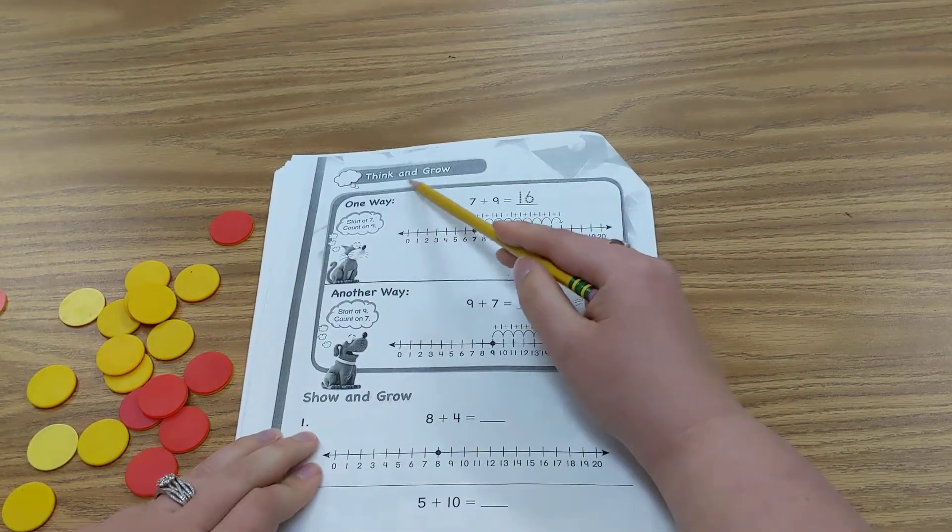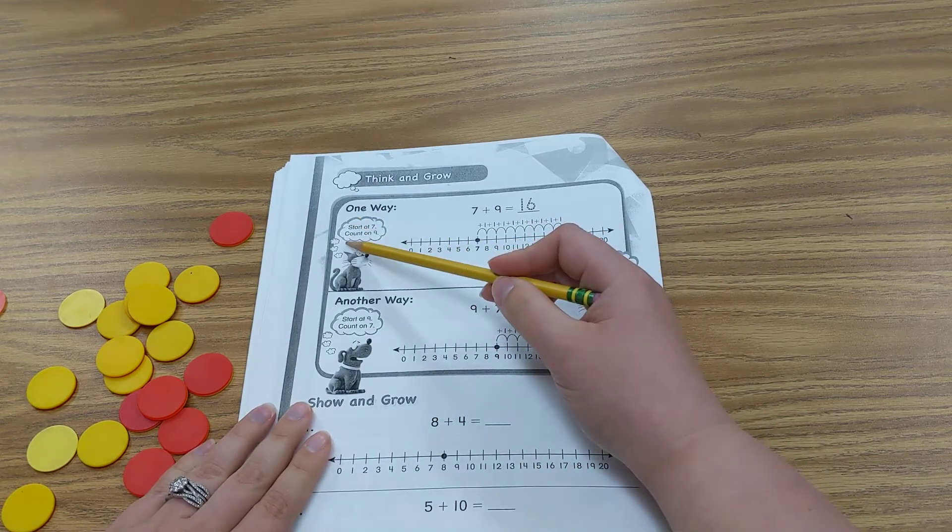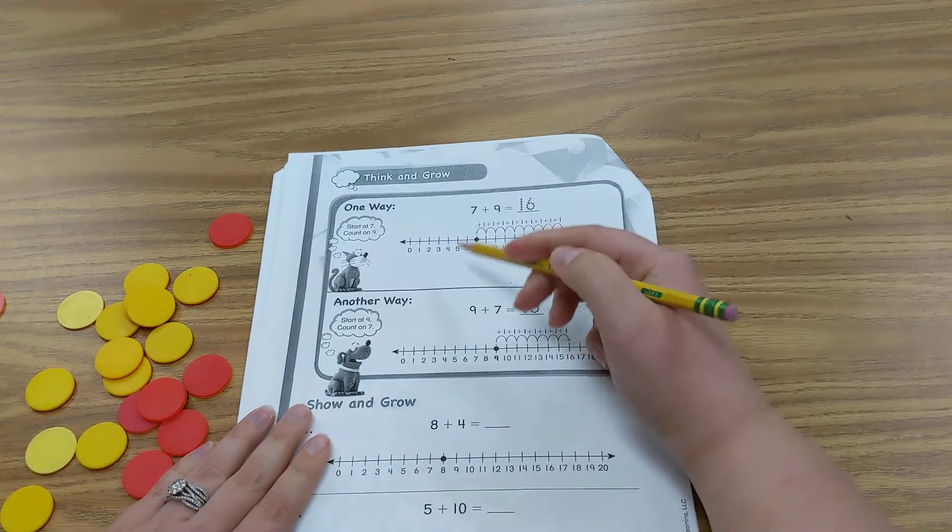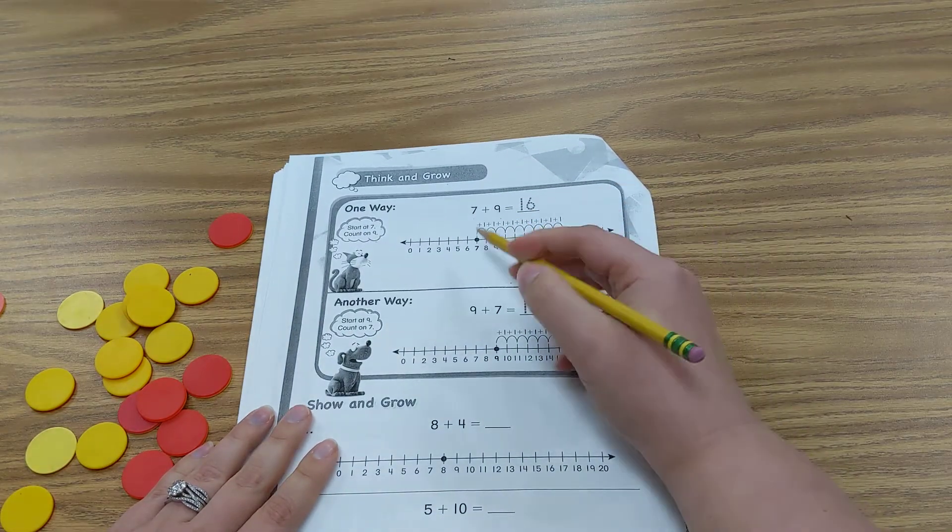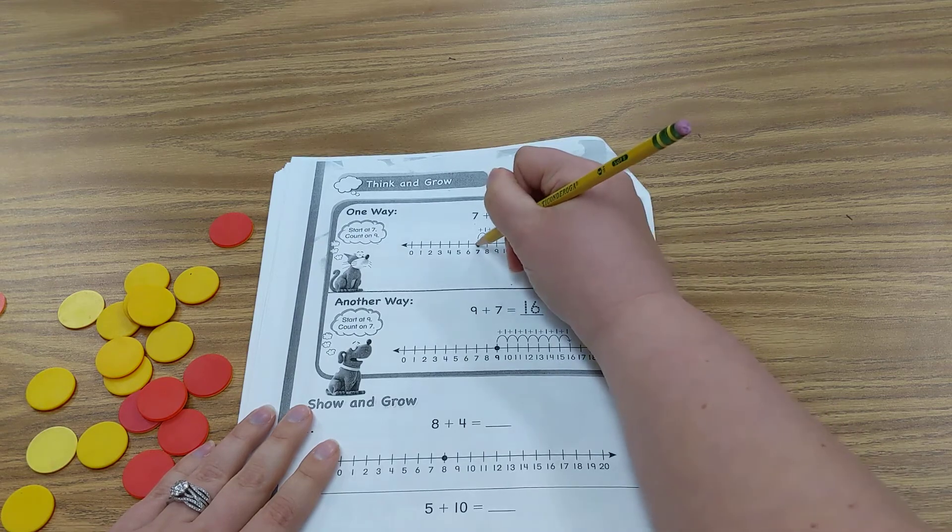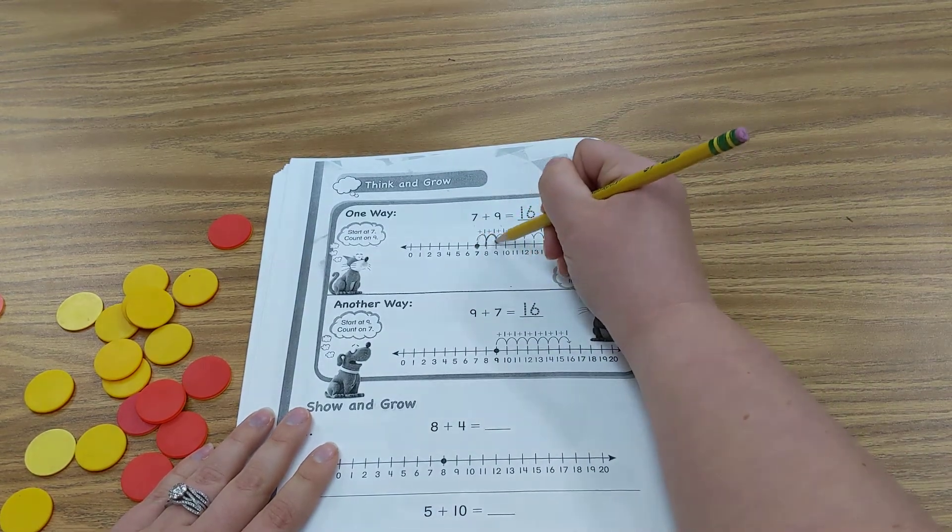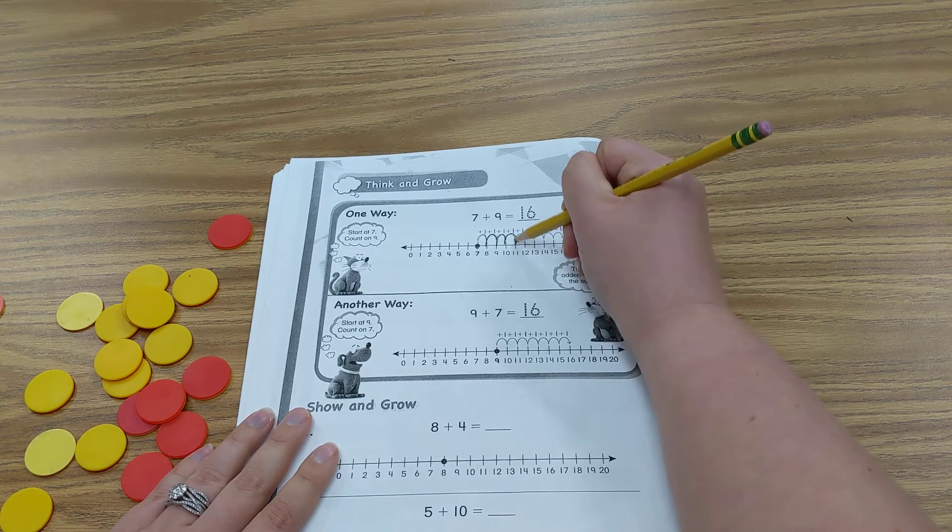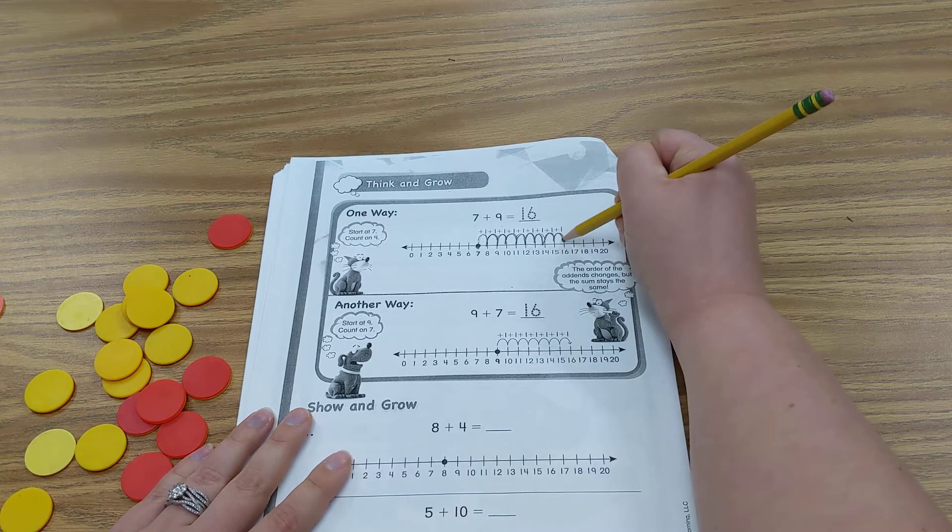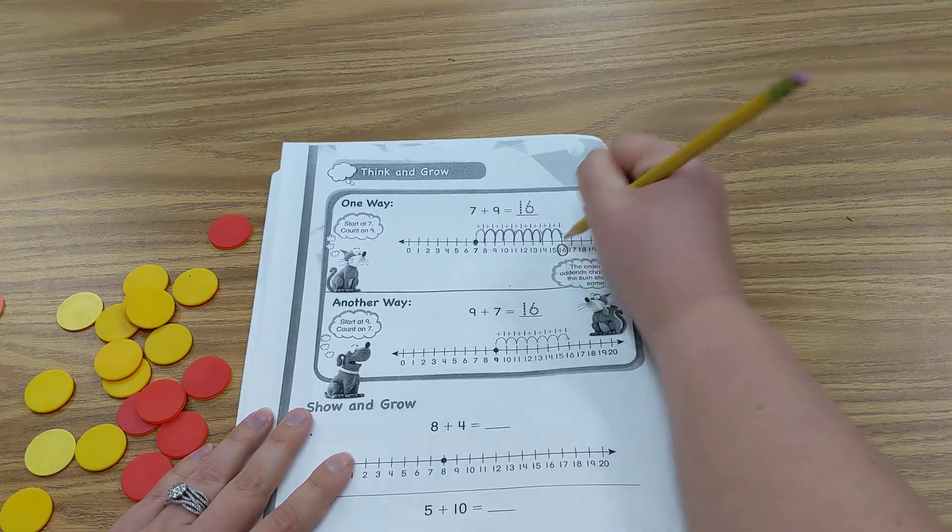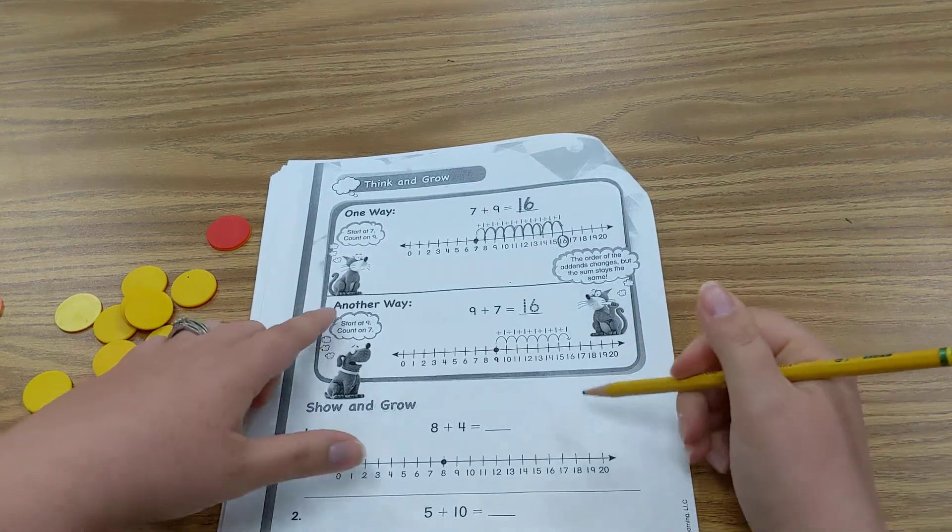Think and grow one way. Start at 7. Count on 9. So we have 7 plus 9. So we start at 7 and we count up 9. 1, 2, 3, 4, 5, 6, 7, 8, 9. And our answer is 16.